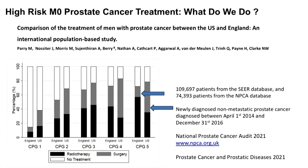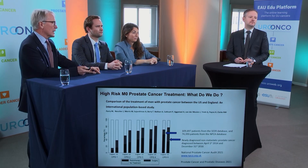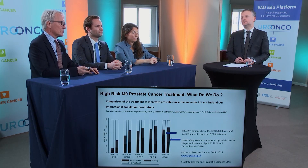We've just published a paper from the National Prostate Cancer Audit. Looking at the histogram for the high-risk localised prostate cancer cohort, you can see the difference between England and the US — over 109,000 from the SEER database in the US and over 74,000 from the NPCA database. In the US, about half of these patients have been treated with surgery; in the UK, it's about 10%.